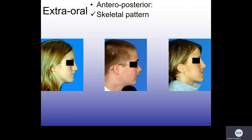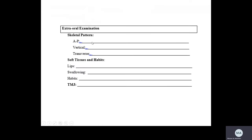The second part is looking at the convexity of the face. For facial convexity, we rely on three points: Glabella, which is the point between the eyebrows; Subnasale, which is the junction between the lower border of the nose and the upper lip; and Pogonion. These three points are usually straight or form a mild convexity in Class I cases, a convex profile in Class II cases, and usually a concave profile in Class III cases. In the AP section, write the skeletal class then add information about facial convexity.